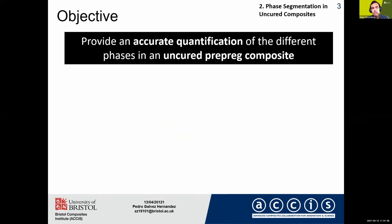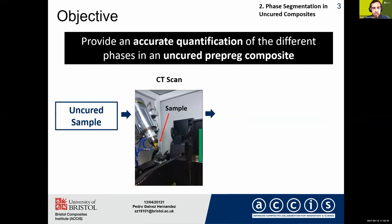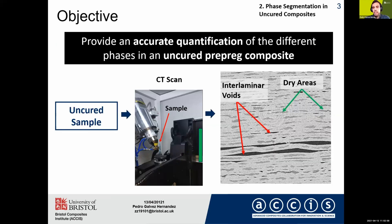It would be really good if we could provide an accurate quantification of the different phases in uncured prepreg composites, so that we can then provide feedback to the manufacturing process to improve it and reduce the amount of defects. In my case, I prepared an uncured sample, CT-scanned it, and generated a 3D grayscale image with the interlaminar voids and the dry areas.